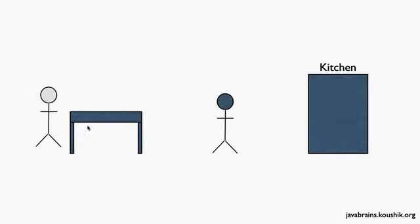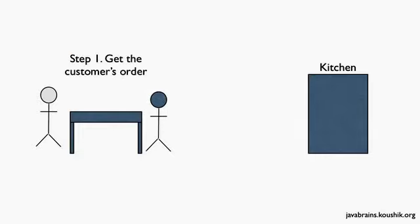Now we have a customer who comes in and they want to try out this new restaurant. So what are the steps that this guy has to do in order to serve the customer? Step one would be to first get to know what the customer wants — get the customer's order. He has to get the menu and hand it over to the customer. The customer chooses from one of the items available in the menu and then our stick man gets the order.